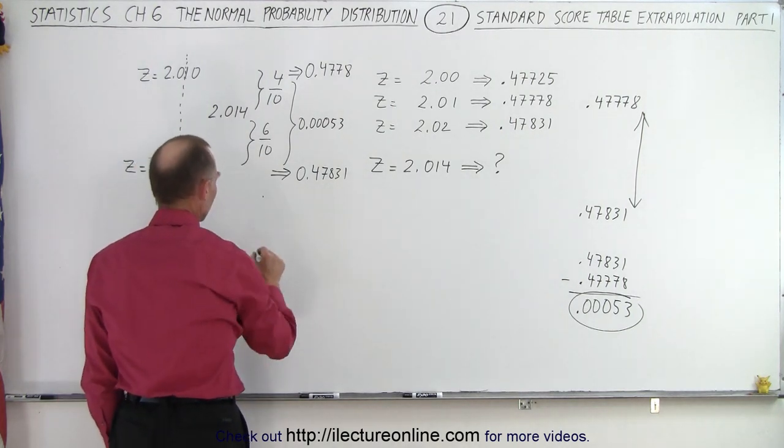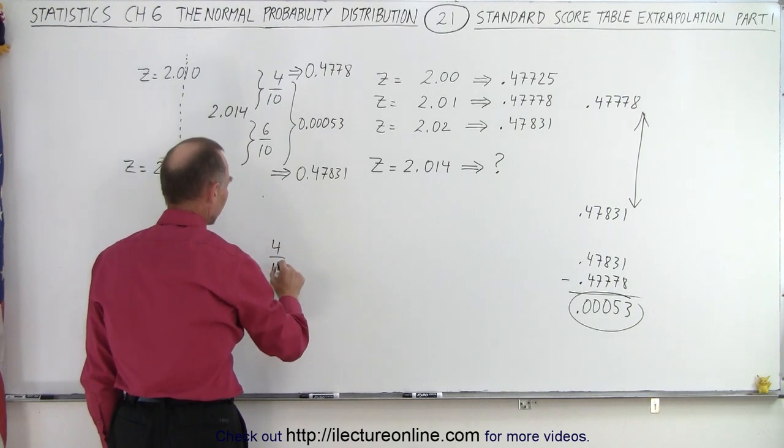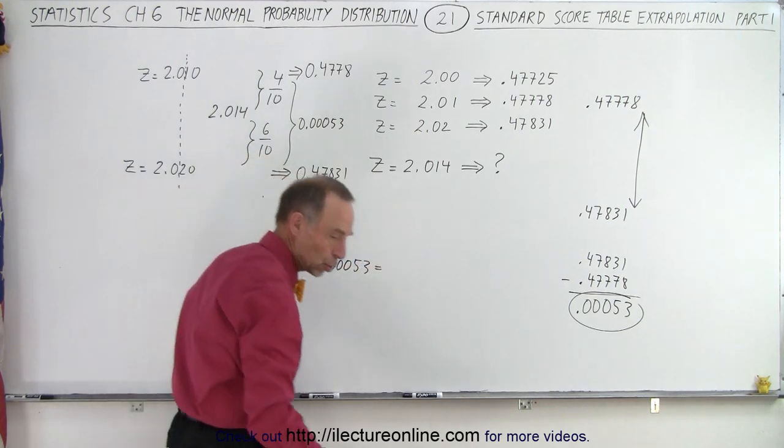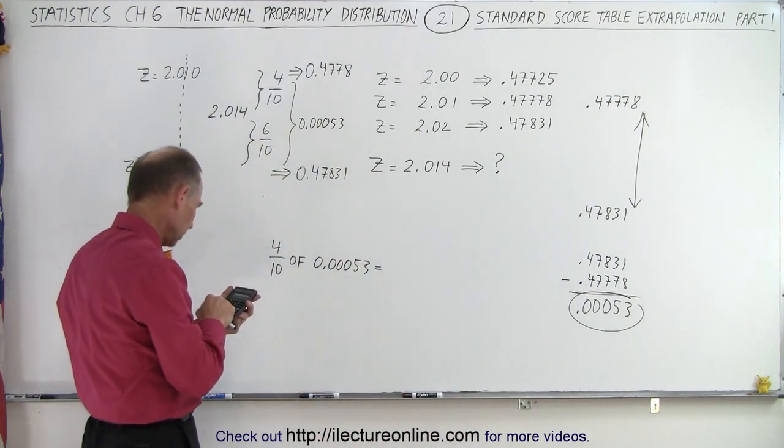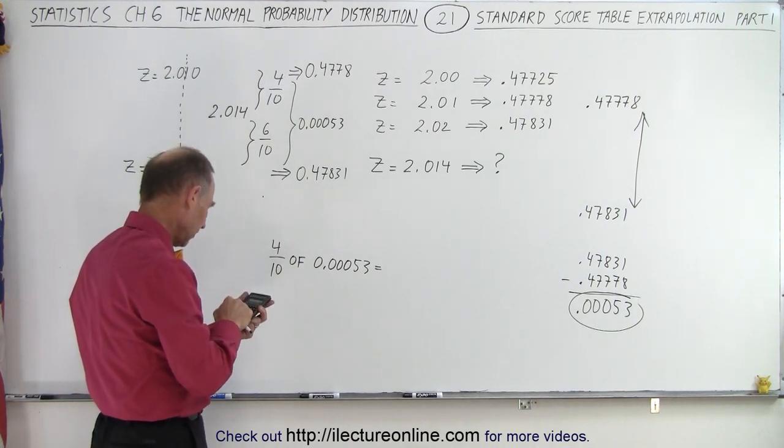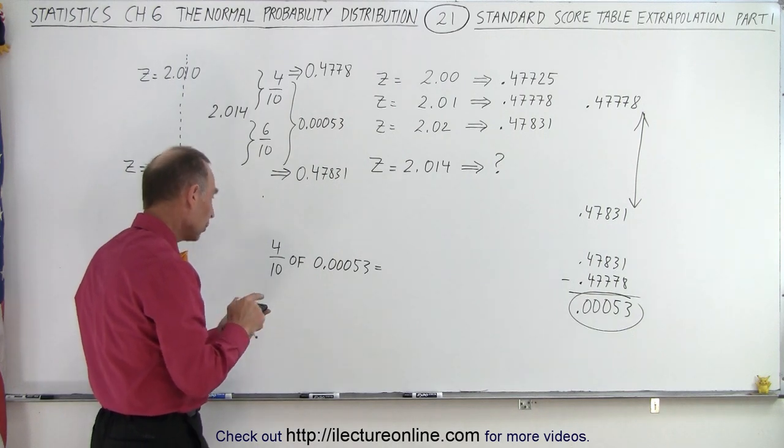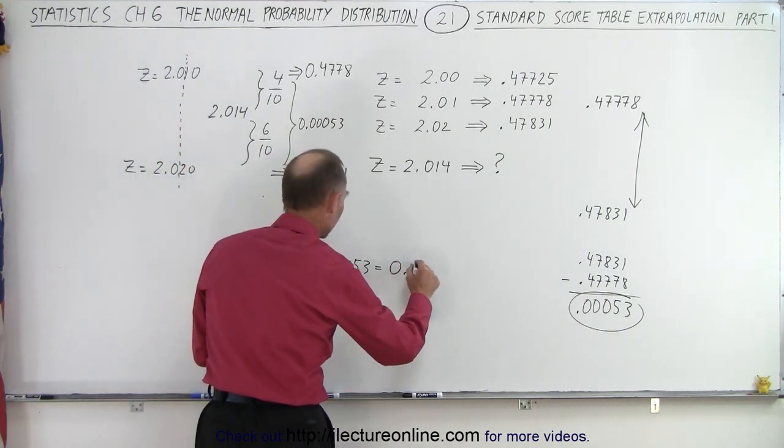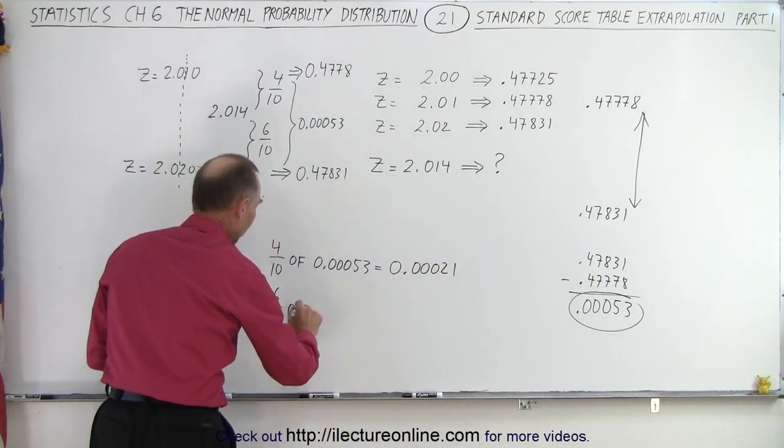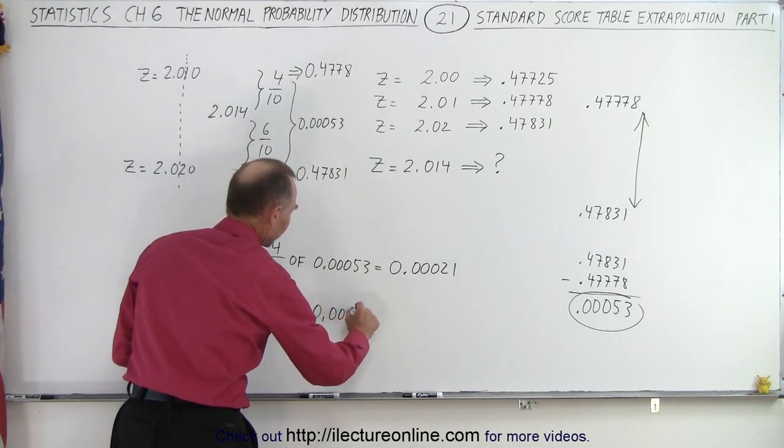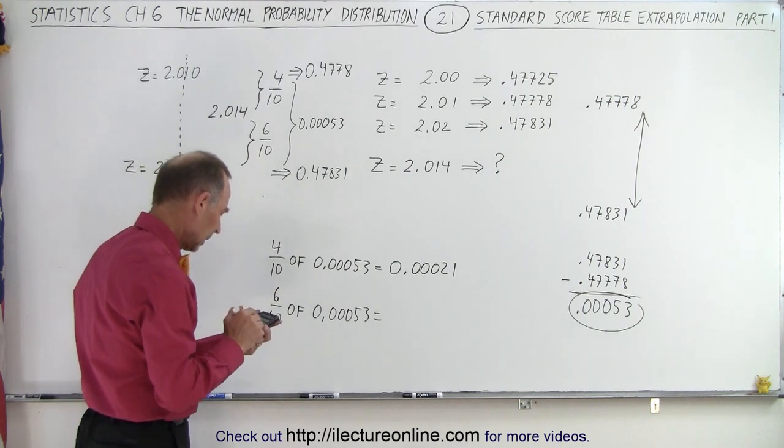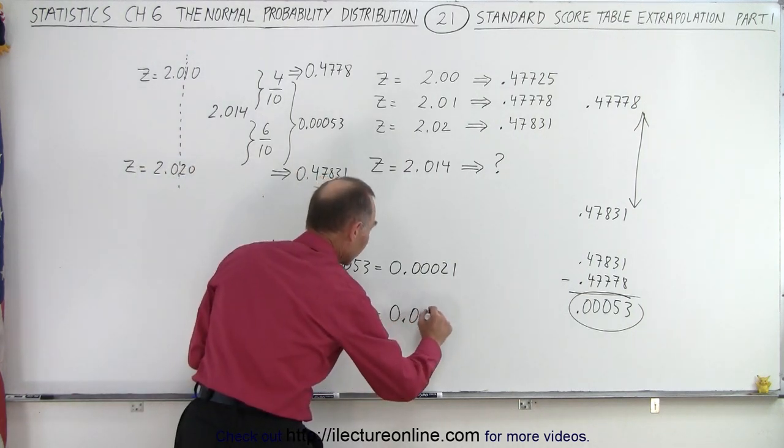So 4 tenths of 0.00053 is equal to, let me write it again, 53 times 0.4 equals, that would be about 0.00021. And 6 tenths of 0.00053 is equal to 0.00038.